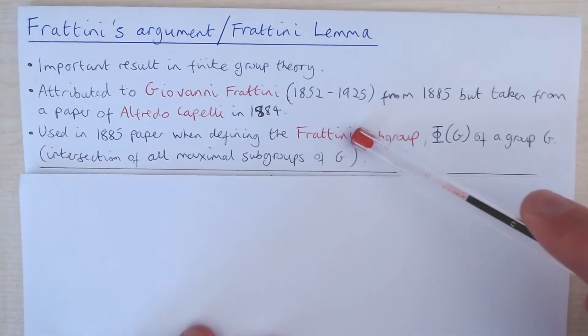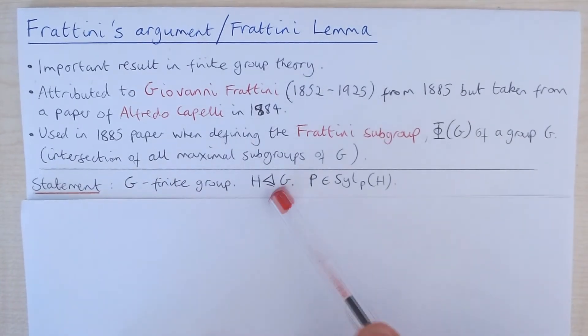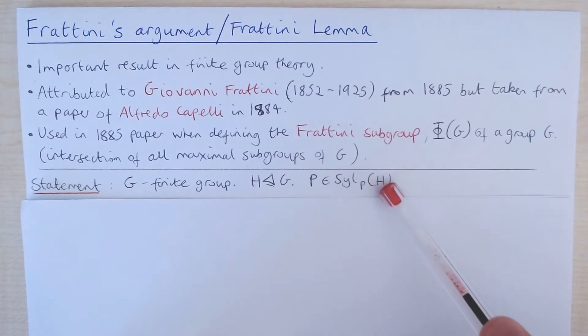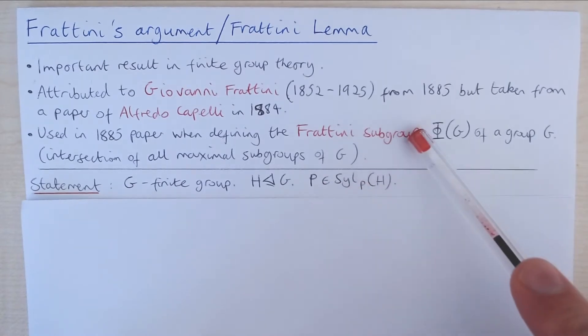So the statement of the lemma is as follows. G is a finite group, H is a normal subgroup of G, and P is a Sylow P subgroup of H for some prime P dividing the order of H. So this subgroup of H, P, is a subgroup of order P to the R, where R is maximal.